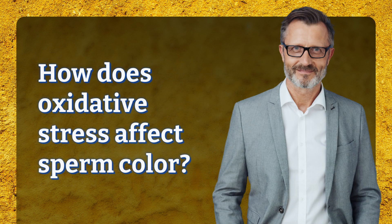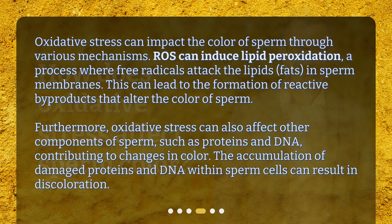How does oxidative stress affect sperm color? Oxidative stress can impact the color of sperm through various mechanisms. ROS can induce lipid peroxidation, a process where free radicals attack the lipids (fats) in sperm membranes. This can lead to the formation of reactive byproducts that alter the color of sperm.